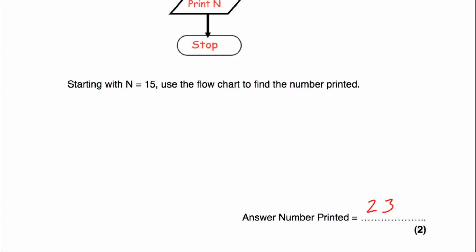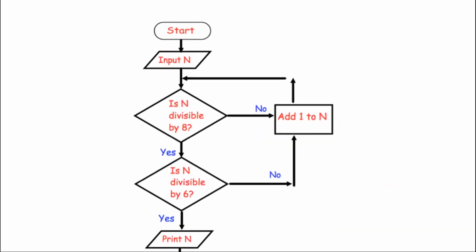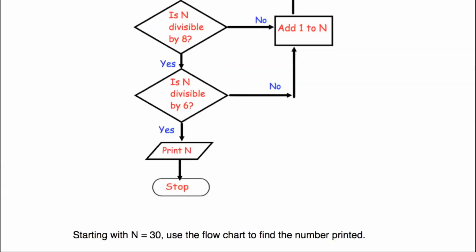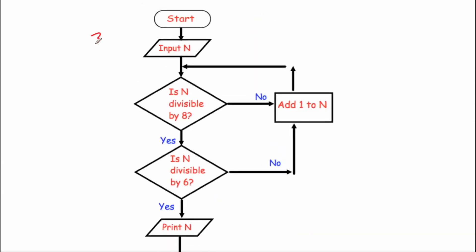Let's look at question number two. We start with N equals 30. Is 30 divisible by 8? No — add one: 31. Is 31 divisible by 8? No — add one: 32. Is 32 divisible by 8? Yes. Is it divisible by 6? No — so we add one: 33.